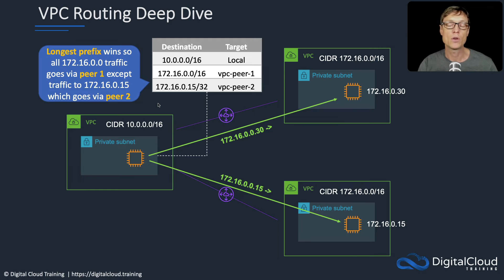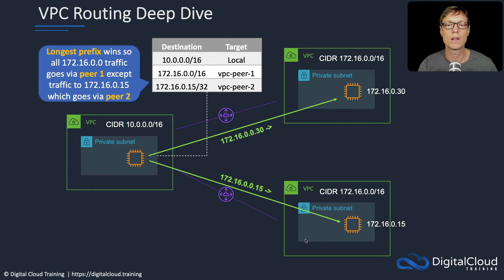Another way to set this up is if you had multiple subnets on this side, each with a different routing table, and you could split the traffic — one route table pointing to this CIDR range via VPC peer one, and a second subnet with another instance that has a route going out via VPC peer two. However, that doesn't solve this specific problem because this individual instance needs to talk to some computers in one VPC and then to a specific instance in the other.